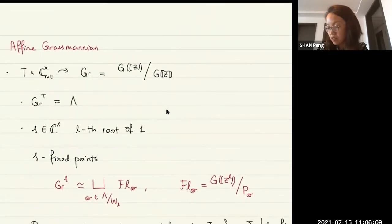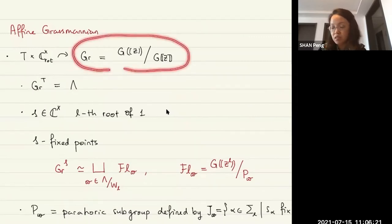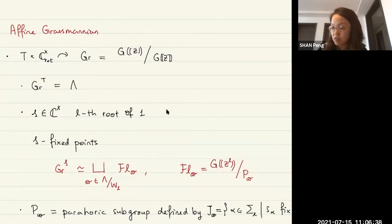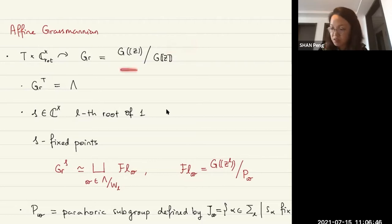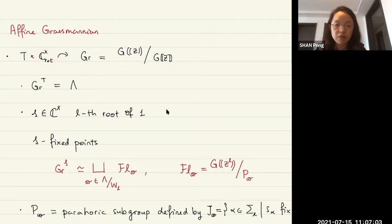Let me start with the geometric part. We'll be interested in the following varieties. We'll be considering the affine Grassmannian, which we've seen many times at this conference. This is just taking the points of G in the field of Laurent power series, divided by G with points in the formal power series. We have an action of the maximal torus T on it by left multiplication, and also a ℂ* action by loop rotation.